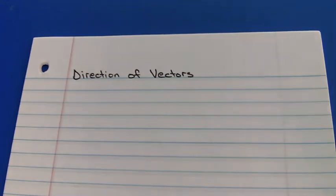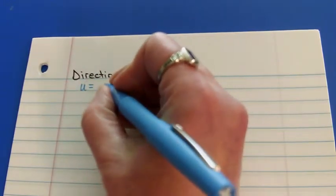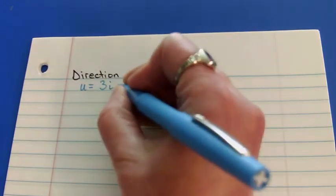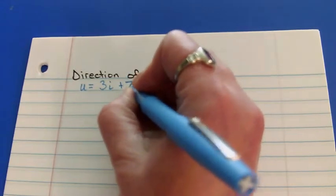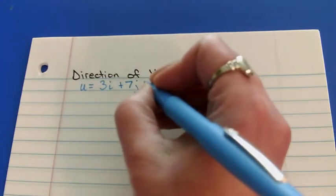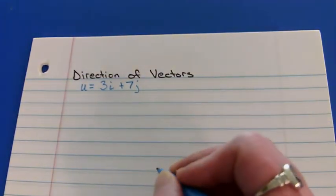When we're talking about direction, I'm really talking about the angle of that vector. So let's take, and I'm going to alternate the different ways that we can write it. That's 3 in the horizontal direction, 7 in the vertical direction.